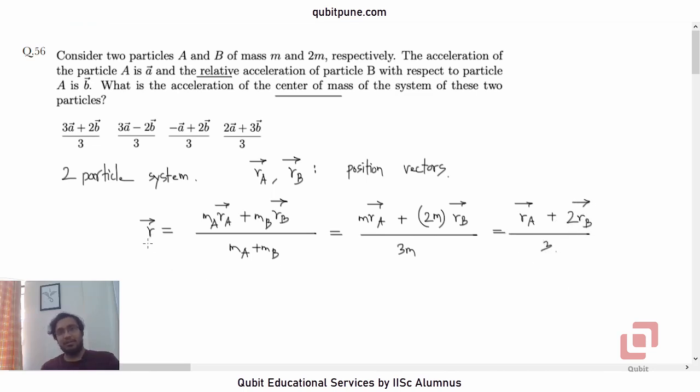This is the position vector of the center of mass. We have to differentiate this twice to get the acceleration because they want us to determine the acceleration.